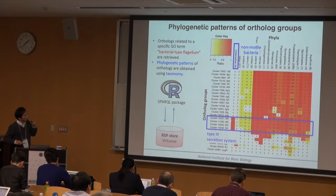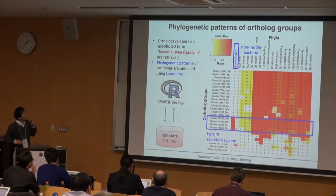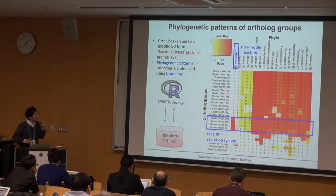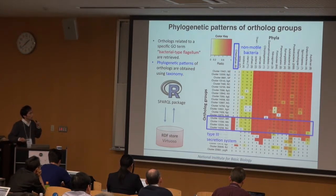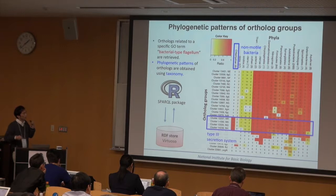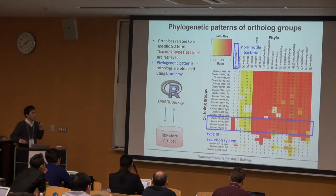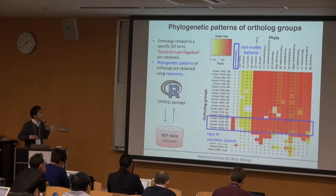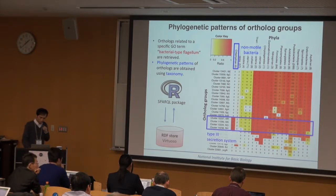We can see the phylogenetic patterns of each ortholog group and compare them across groups. For example, some ortholog groups exist only in non-motor bacteria, which is unusual because flagellar proteins are found in non-motor bacteria. But these genes are known to be part of a specific secretion system, illustrating how phylogenetic patterns relate to gene function. This demonstrates integrative analysis of genomic resources from multiple data sources.